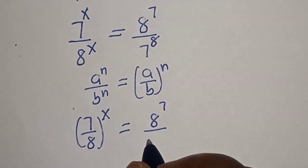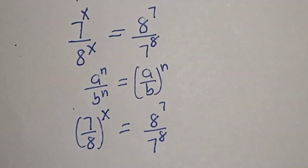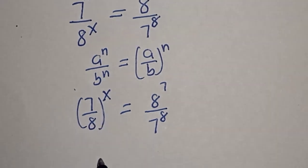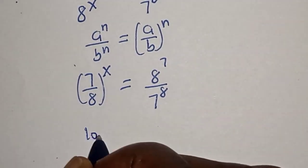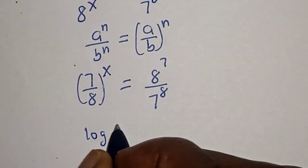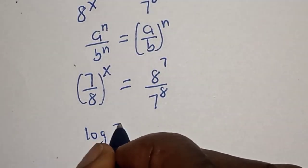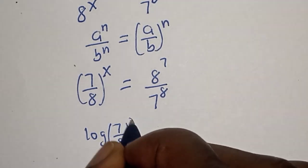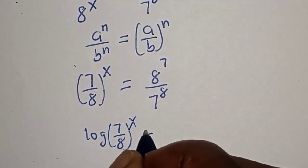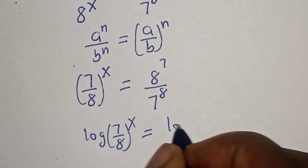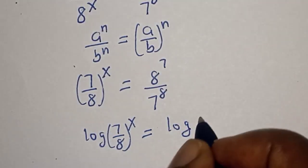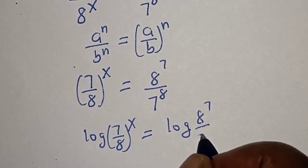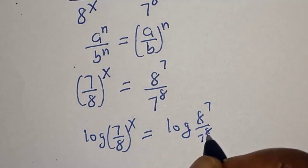Then this becomes (7 over 8) to the power of x is equal to 8 raised to power 7 divided by 7 raised to power 8. Let's take the log of both sides: log of (7 over 8) to the power of x is equal to log of (8 raised to power 7 divided by 7 raised to power 8).